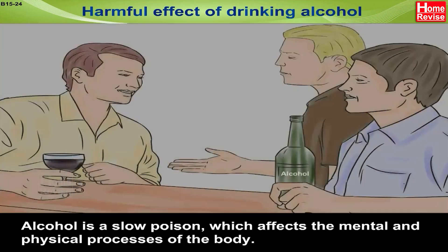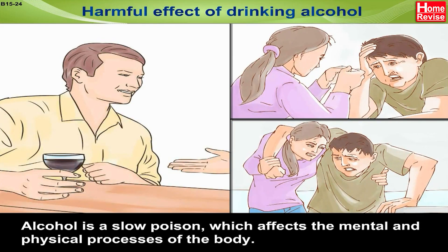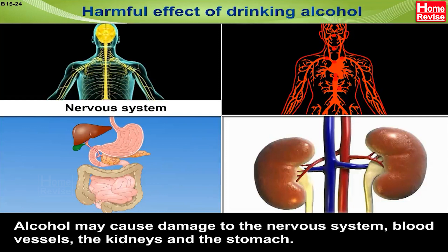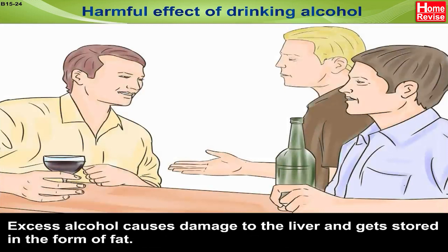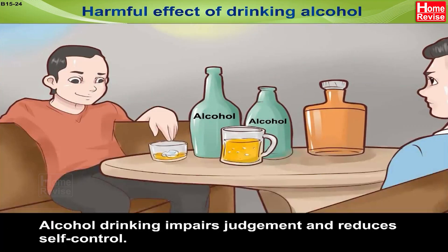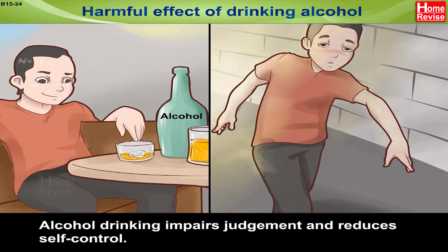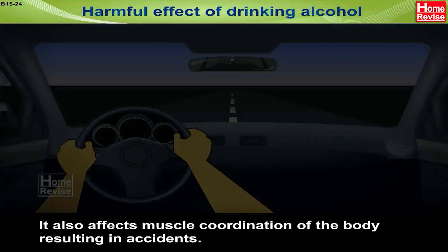Harmful effects of drinking alcohol: alcohol is a slow poison which affects the mental and physical processes of the body. Alcohol may cause damage to the nervous system, blood vessels, the kidneys and the stomach. Excess alcohol causes damage to the liver and gets stored in the form of fat. Alcohol drinking impairs judgment and reduces self-control. It also affects muscle coordination of the body, resulting in accidents.